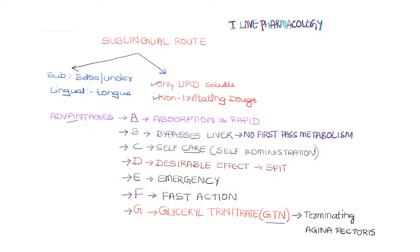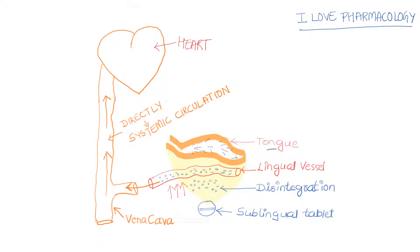D stands for desirable effect — once the desirable effect is achieved, you can spit out the remaining portion of the drug. E stands for emergency conditions, because it is fast-acting. F stands for fast action. G stands for the example — glyceryl trinitrate (GTN) — used for terminating angina pectoris.